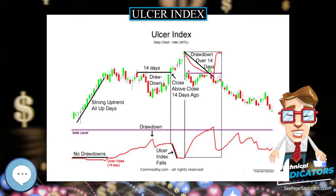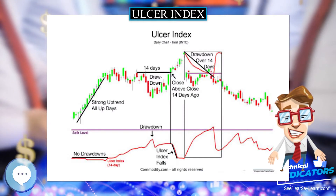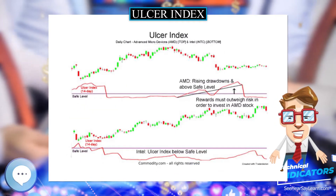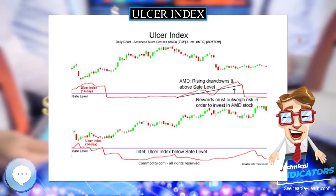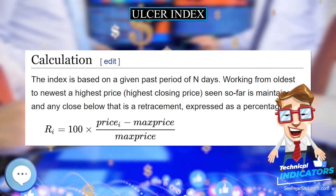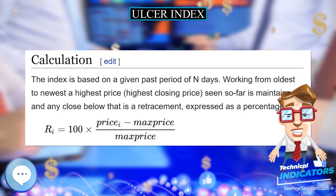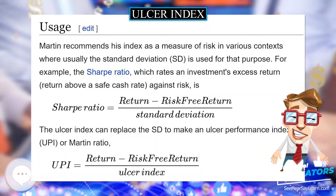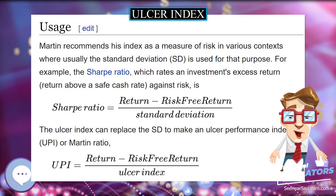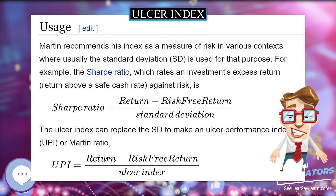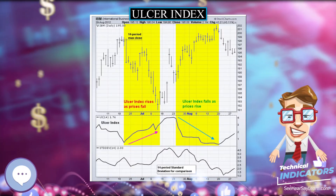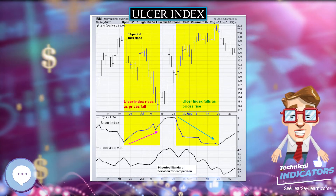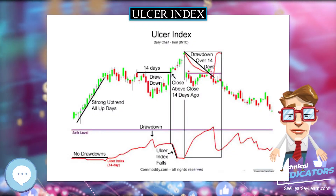It is the downside that causes stress and stomach ulcers, as the index's name suggests. The name predates the discovery that most gastric ulcers are actually caused by a bacterium. The term 'Ulcer Index' has also been used by Steve Shellans, editor and publisher of MoneY Research newsletter, for a different calculation also based on the ulcer-causing potential of drawdowns. Shellans' index is not described in this article.